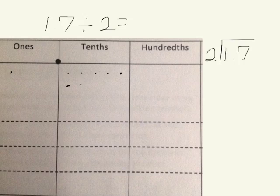The first problem is 1 and 7 tenths divided by 2. I'm showing my 1 and 7 tenths in the place value chart: 1 one and 7 tenths. I've also shown the standard algorithm, 1 and 7 tenths divided by 2.